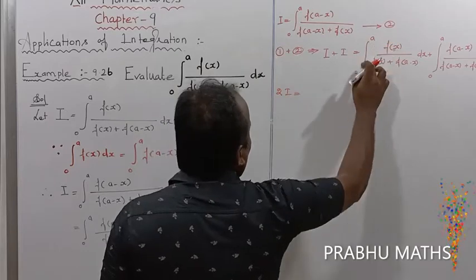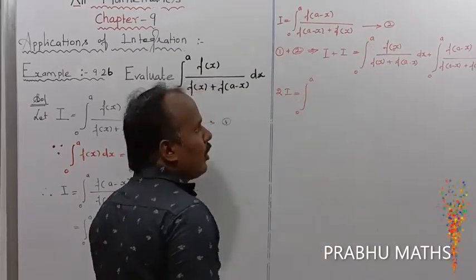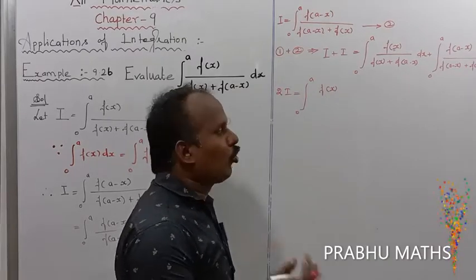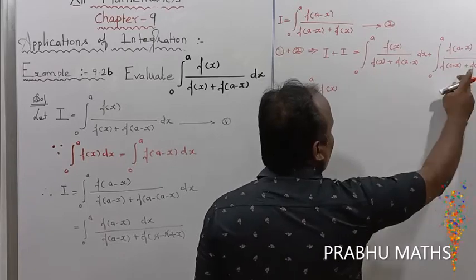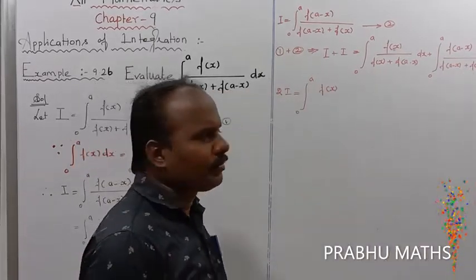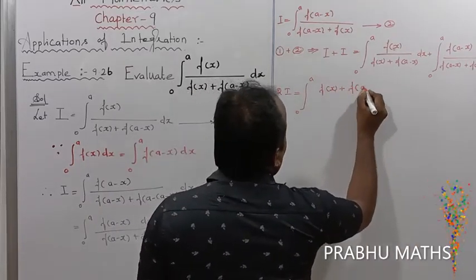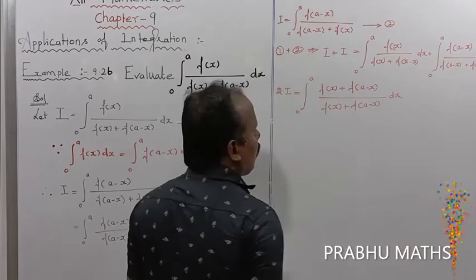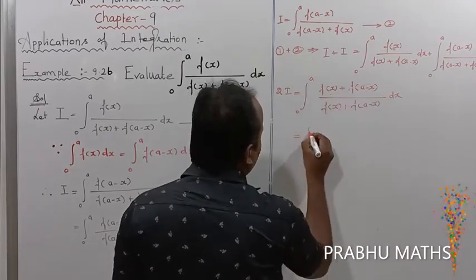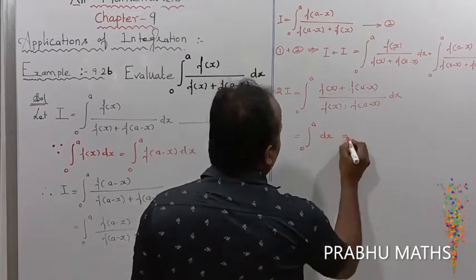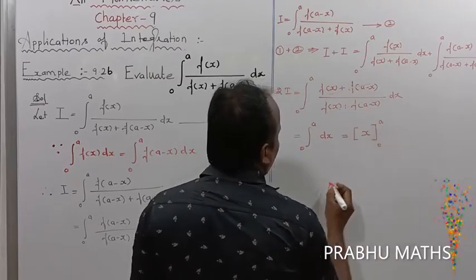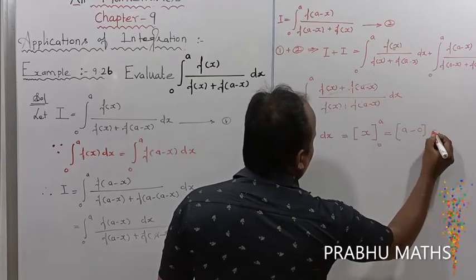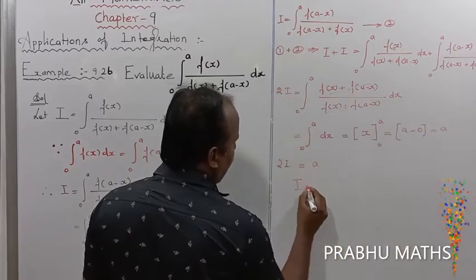So 2i equals the common integral from 0 to a. The denominators of the two functions are the same: f(a minus x) plus f(x). The numerators f(x) and f(a minus x) combine so that numerator and denominator fully cancel, leaving integral from 0 to a of dx. Integrating gives x from 0 to a, so 2i equals a, therefore i equals a divided by 2.